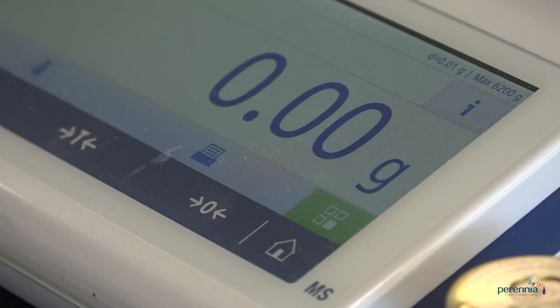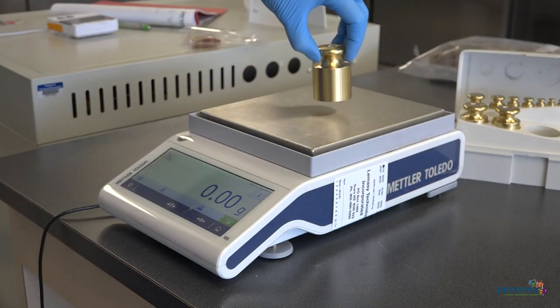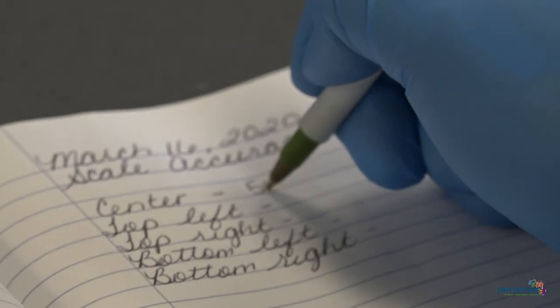Step 3: place the known test weight in the center of the scale. Record your findings.